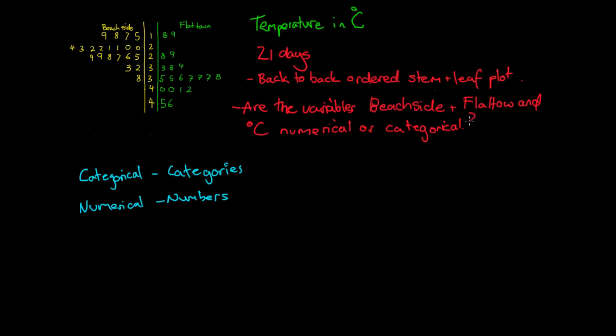If we're wanting to answer this question, are the variables Beachside and Flat Town and degrees Celsius numerical or categorical, we really need to break it down. So we've got two sets of variables. Firstly, we've got Beachside and Flat Town, which are our two categories of our stem and leaf plot. And then we've got our temperatures, which are down here, which are all these numbers just around here. So we really need to look at it in two parts.